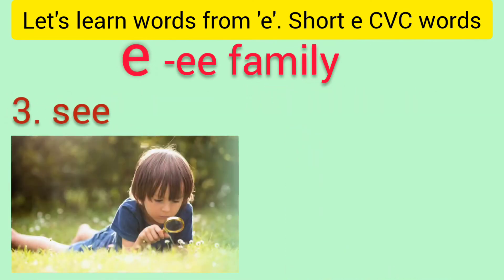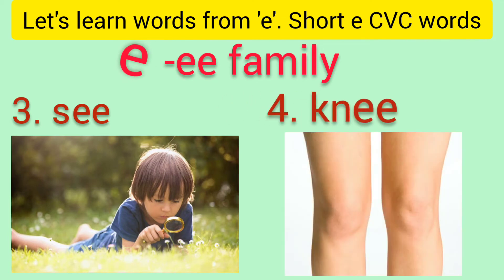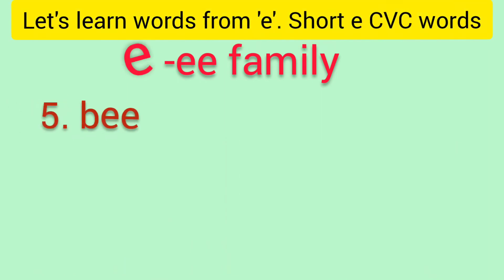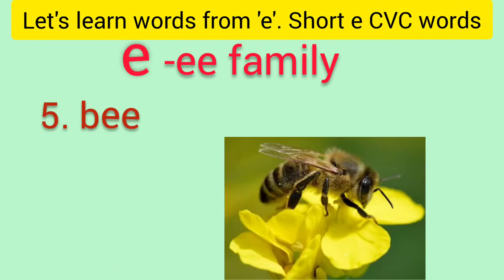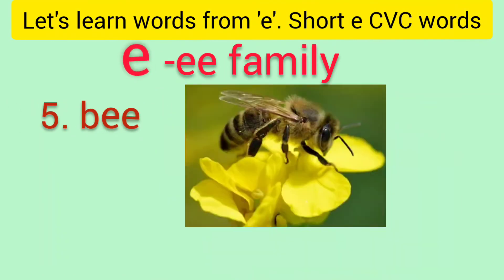Number three is S-EE: sea. Look at how the boy is seen through the magnifying glass. Number four is N-EE: knee. Number five is B-EE: bee — the buzzing bee.